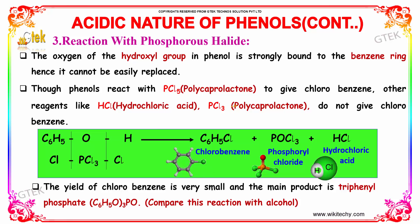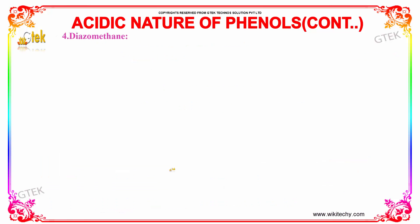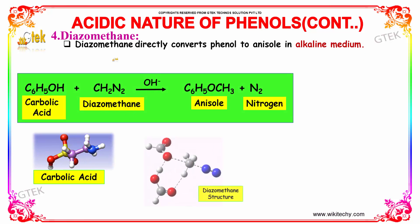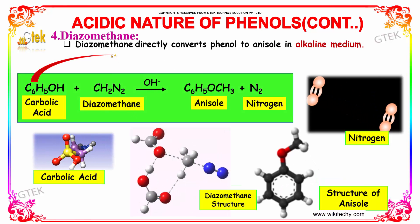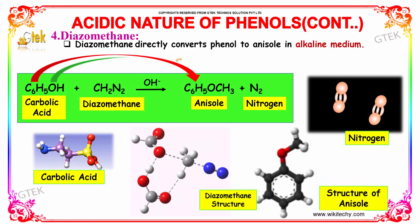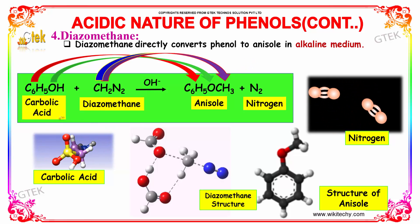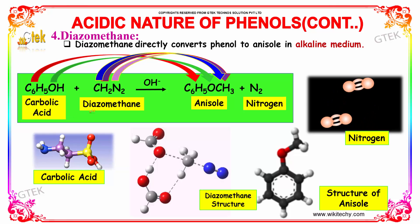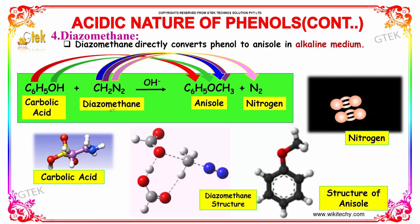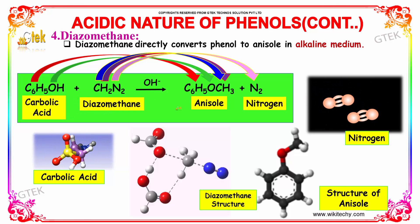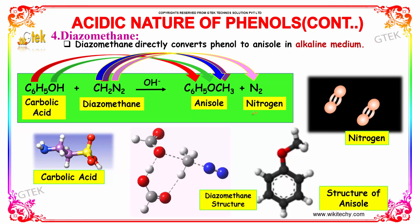The yield of chlorobenzene is very small, and the main product is triphenyl phosphate, that is (C₆H₅O)₃PO. Additionally, diazomethane directly converts phenol to anisole in alkaline medium — carbolic acid reacts with diazomethane, removing the OH group to form anisole and nitrogen.